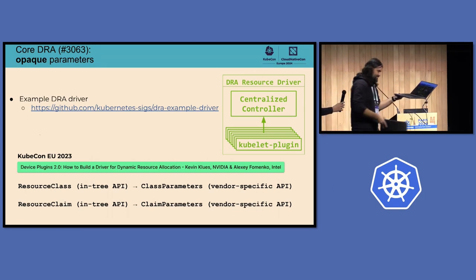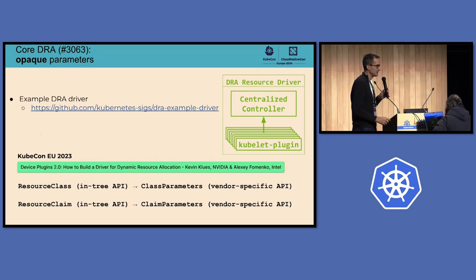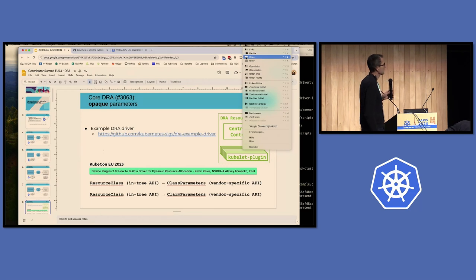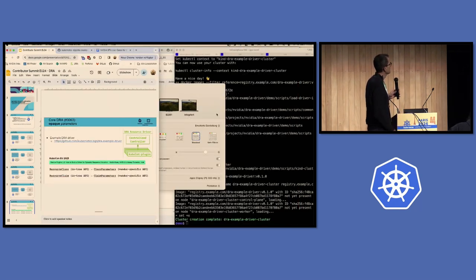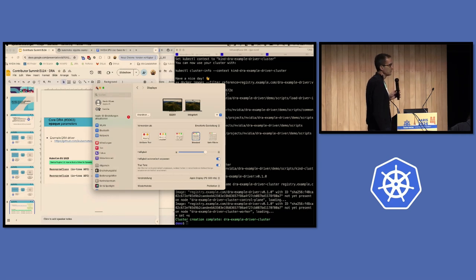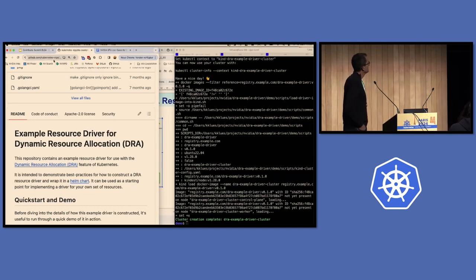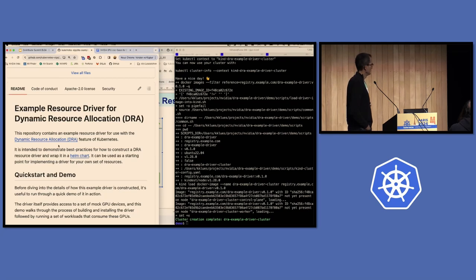Kevin and Alexey, who's also in the audience, worked on this example driver. We've been talking about it at a few KubeCons already. It only needs a kind cluster that runs on Mac or Linux. We'll show how this works in practice, what it looks like for the user — it's very similar to real GPUs, that's what it's simulating. If you go to this URL under Kubernetes SIGs, we have an example driver for DRA that you can play around with.